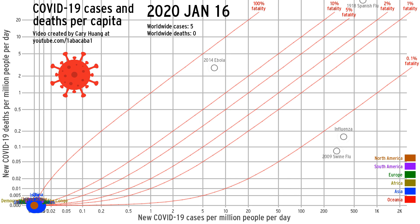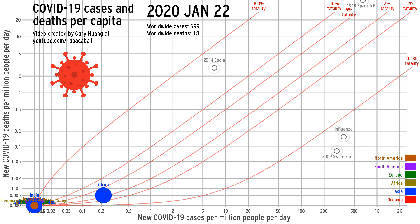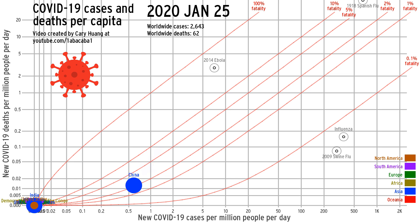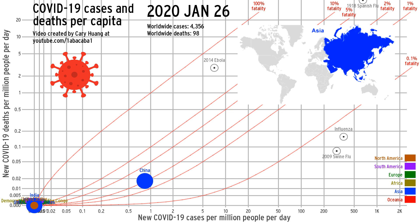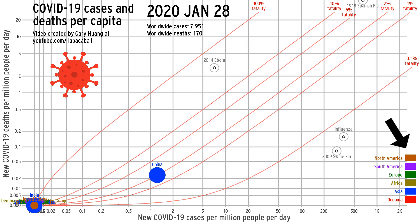The time dimension is not shown visually on this graph. Instead, it's animated, which is why you can start to see China increase in cases and deaths as the clock reaches late January. The blue color of China's bubble indicates it's an Asian country. All country bubbles will be colored based on their continent, as depicted in this key.